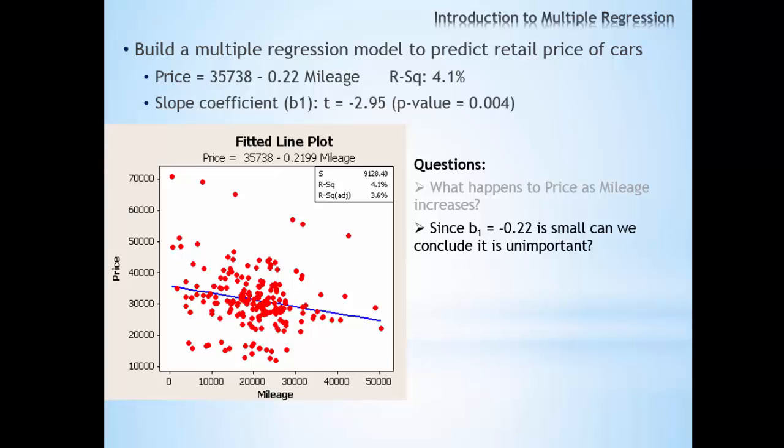In essence, we can interpret the slope coefficient as saying, when the mileage of the car increases by 1, we expect the retail price to go down by 22 cents. That might seem relatively unimportant. However, we have a t-statistic and a p-value that says slope is significant. It's important to consider scale when looking at the magnitude of the slope coefficient.